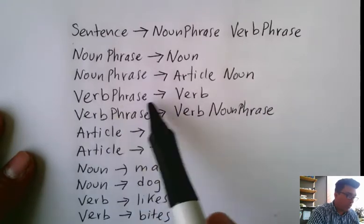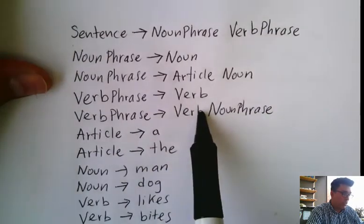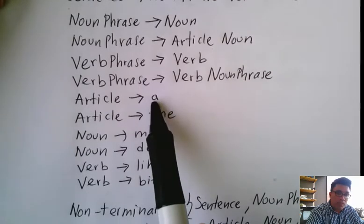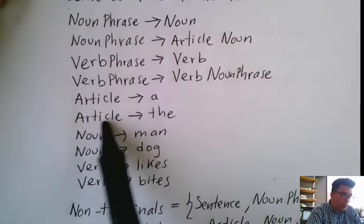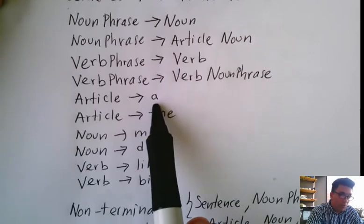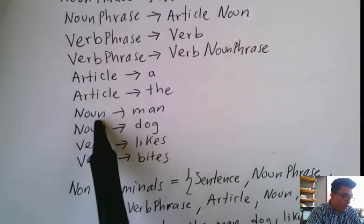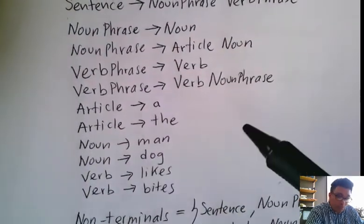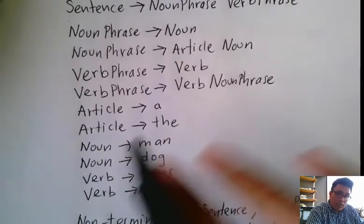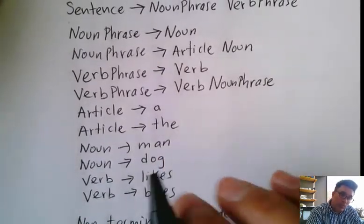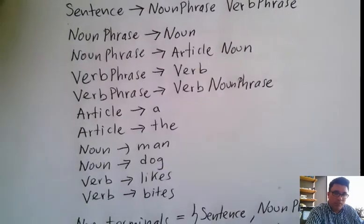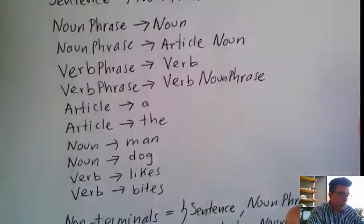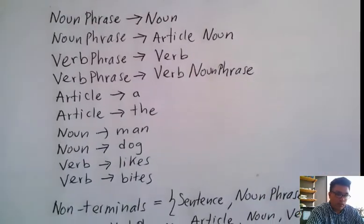Here there is a verb phrase, and there are also two implementations. For the article, in this case, there are two terminals — two possible words, two possible strings: 'a' and 'the'. And this is for noun, and this is for verb. We did some study before about this, so I just want to show the notation that we have, and the notation they have there may look a little different for some of you, but this is what they have.